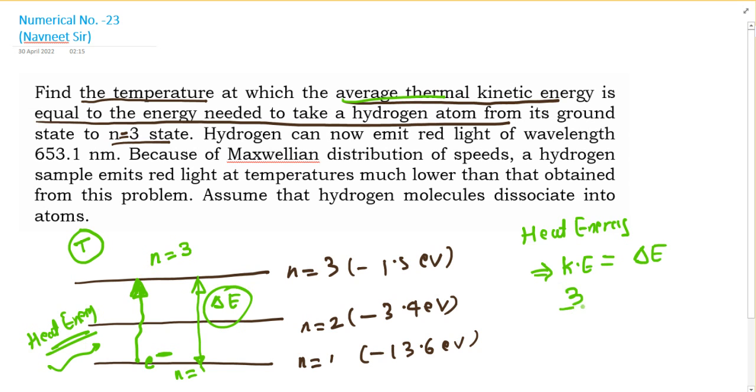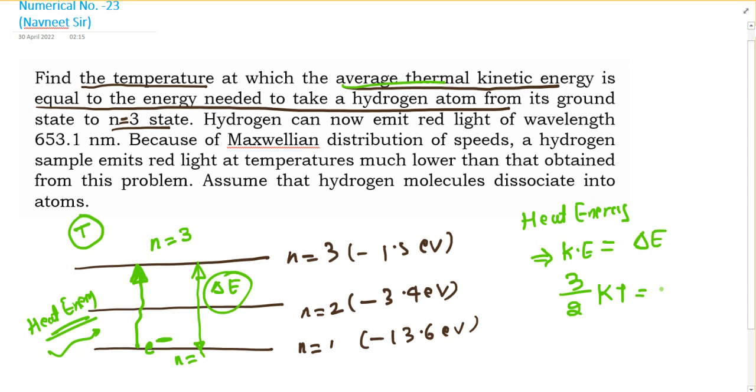The kinetic energy three-halves kT equals negative 1.5 minus negative 13.6, which gives three-halves kT equals 12.1 electron volts.